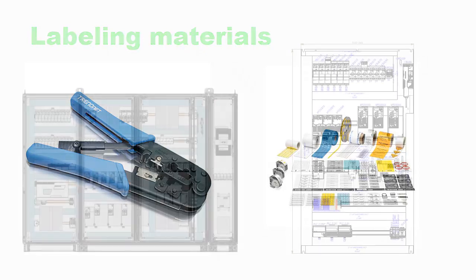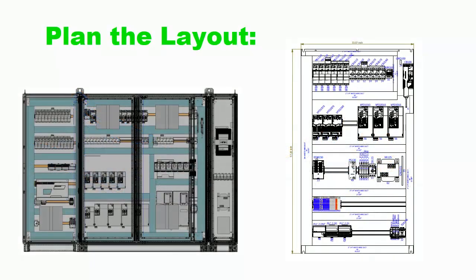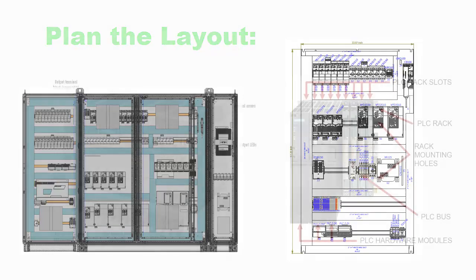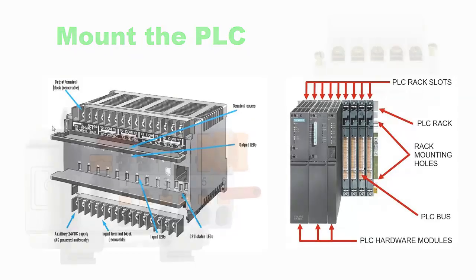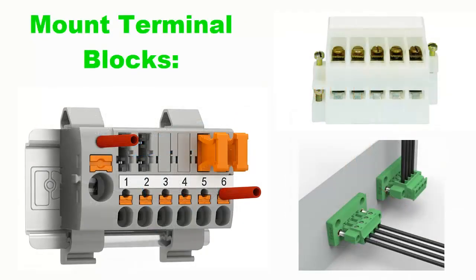Steps: Plan the layout. Determine the components that need to be connected to the PLC. Arrange the components inside the control panel enclosure, keeping in mind spacing, accessibility, and cable routing. Mount the PLC: Install the PLC on the DIN rail inside the enclosure.